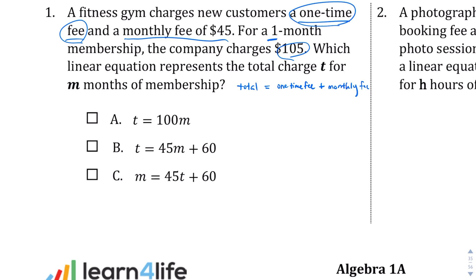We are told that for a one-month membership, the company charges $105. So after one month, we will have paid $105. That's one thing that we know. We don't know the one-time fee yet, so I'm going to leave that blank. I'm going to call it the fee.